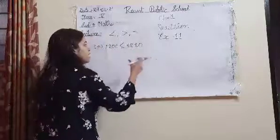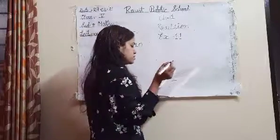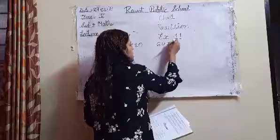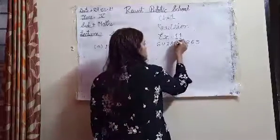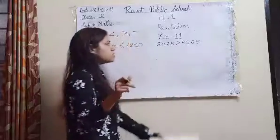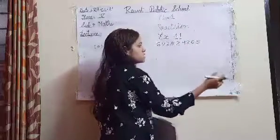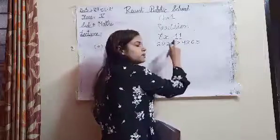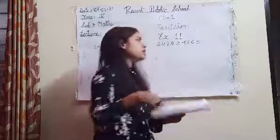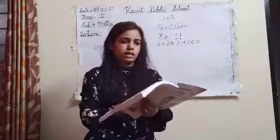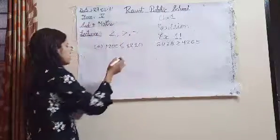1210 is greater than 1200. Next number: 6428 and 4265. 4265 is less than 6428 — so the sign here is less than.